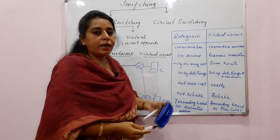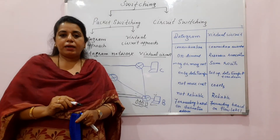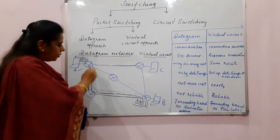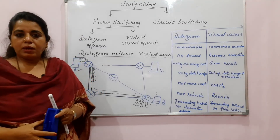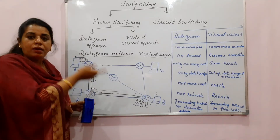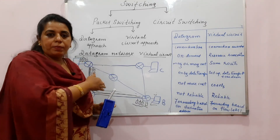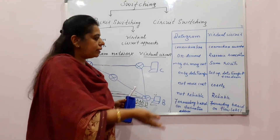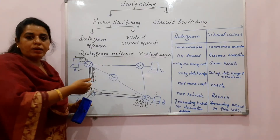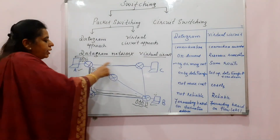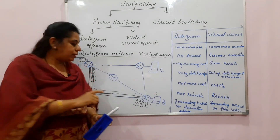Looking at the differences: the datagram approach is connectionless — no connection is established before sending the packet. Whereas the virtual circuit is connection-oriented — a connection is set up beforehand. The datagram approach is on demand — resources, if available, are provided to the packet for processing. Whereas in the virtual circuit, all resources are reserved so the packet is processed immediately and moves to the next router. In the datagram approach, packets may follow the same route or different routes depending on resource availability, whereas in the virtual circuit approach, packets always take the same route.